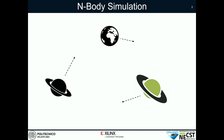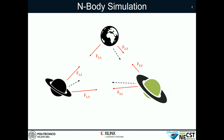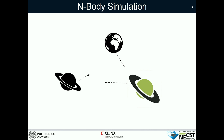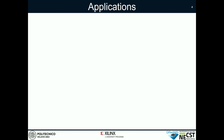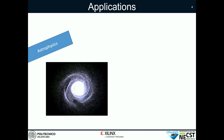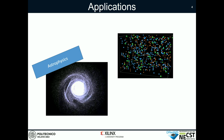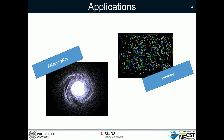Let's see what M-Body Simulation is. M-Body Simulation is the evolution of a system composed of M-Bodies. In this example we have three bodies which interact among each other due to attractive force. For each planet we can compute the forces that affect it and update its position. M-Body Simulation has a wide range of applications that goes from astrophysics, where the bodies are celestial objects, to biology, where the bodies are molecules.